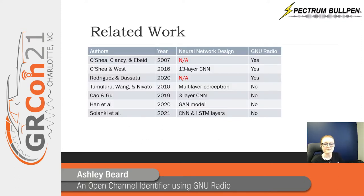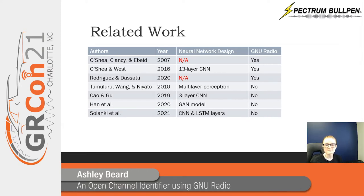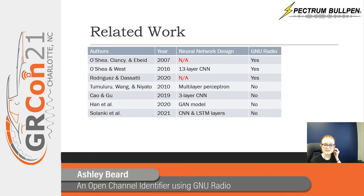The earliest paper in this list is from 2007 by O'Shea, Clancy, and Ebiad. They similarly used GNU Radio to design a signal classification algorithm, but without machine learning — using multi-threading and a connection to a power processing element or PPE. The next related work is a machine learning approach by O'Shea and West called Radio Machine Learning Dataset Generation with GNU Radio. Our work is based off the concept of using simulated radio signal data to test a neural network model. O'Shea and West use a convolutional neural network or CNN, whereas we use a feed-forward neural network, and we also compare with a traditional power estimation algorithm.